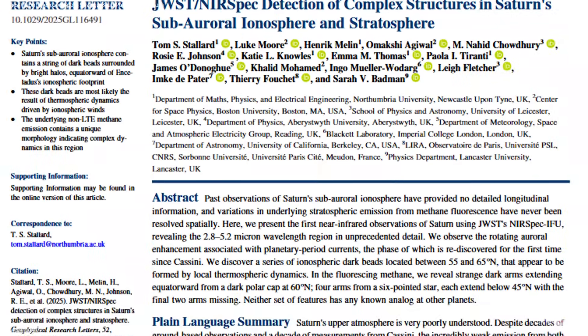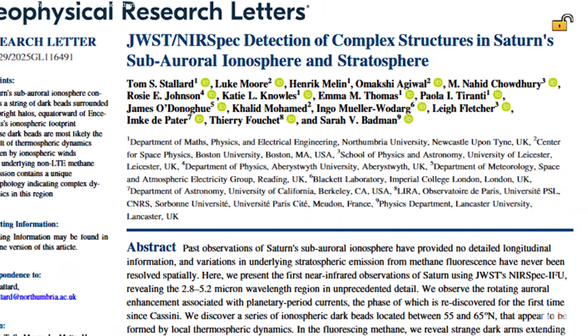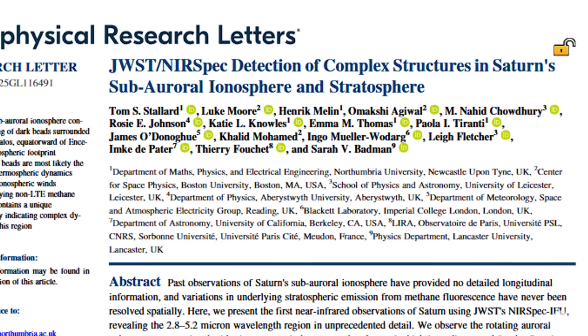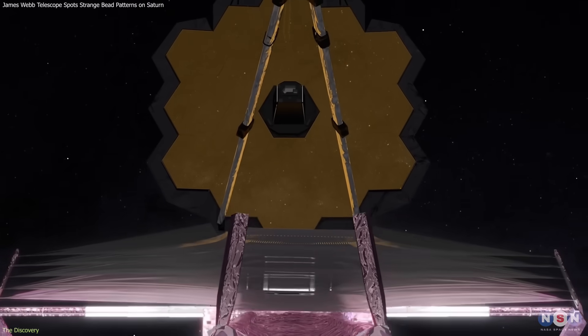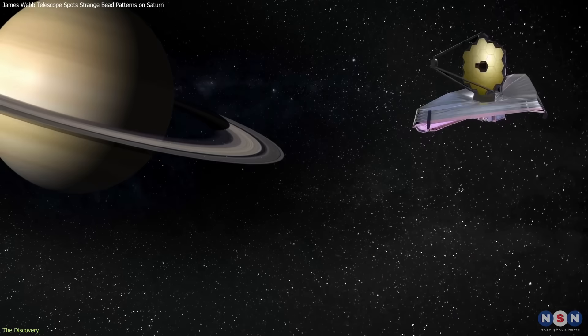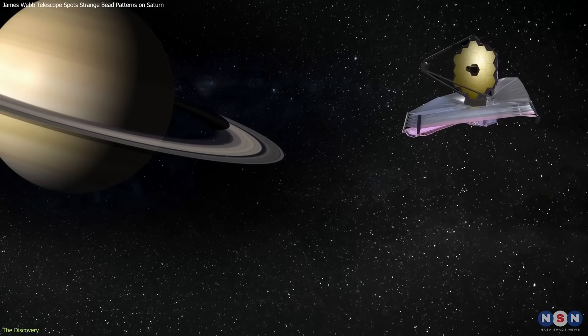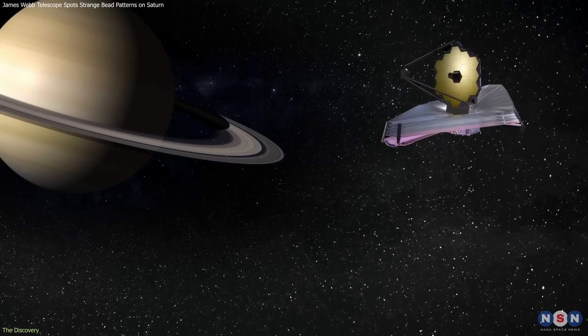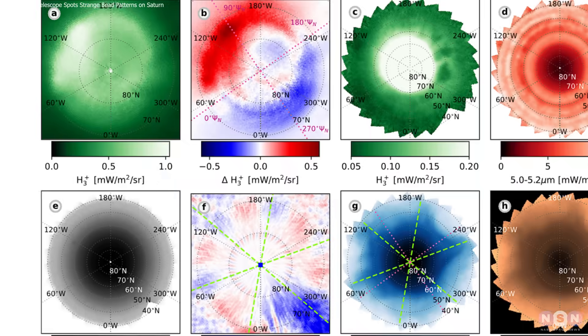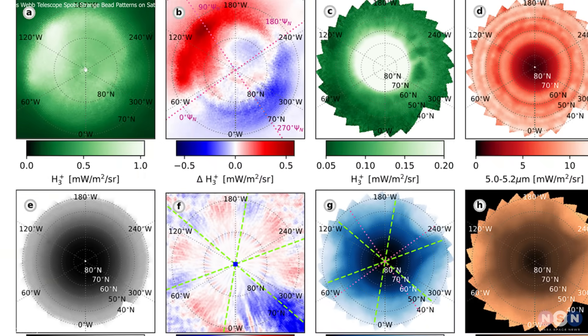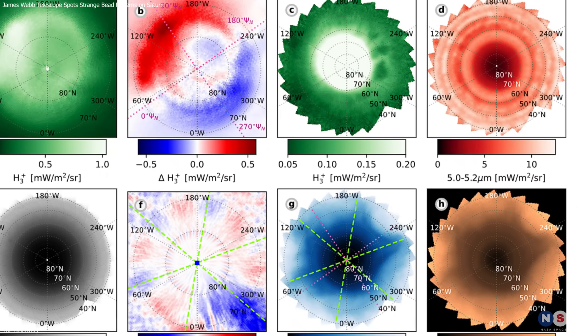On November 29, 2024, an international team of 23 scientists used Webb's Near Infrared Spectrograph, or NIRSPEC, to observe Saturn continuously for 10 hours. Their goal was straightforward, to map emissions from two atmospheric layers at the same time.